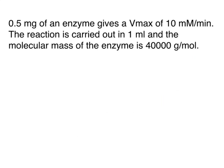Now let's have a look at an example. We have 0.5 milligrams of an enzyme. This enzyme has a Vmax of 10 millimolar per minute, and we carry out the reaction in one milliliter. So what is the specific activity for that?